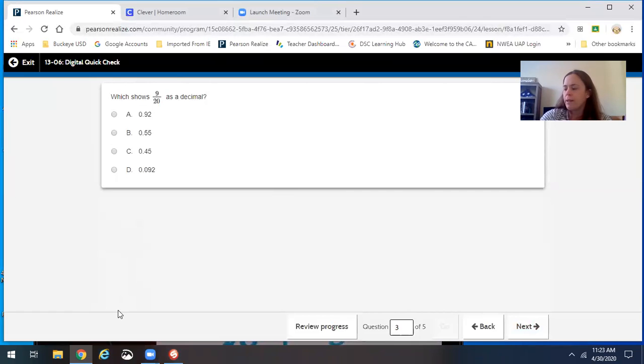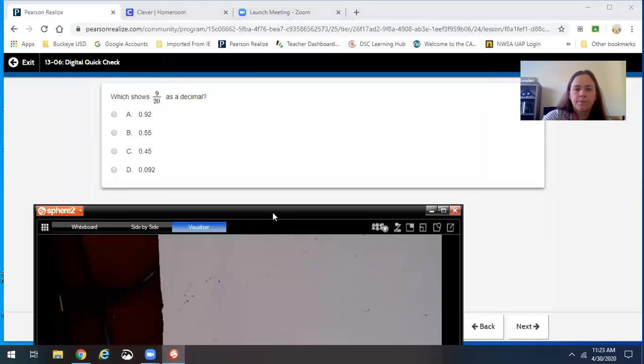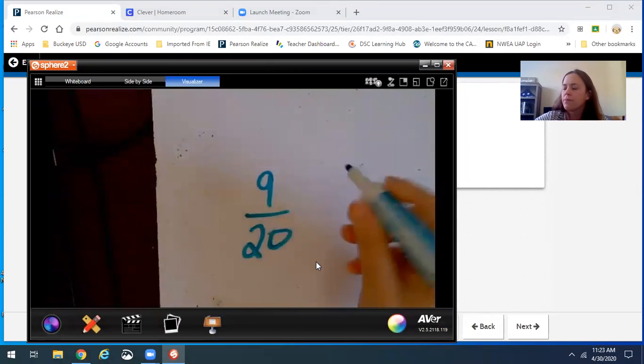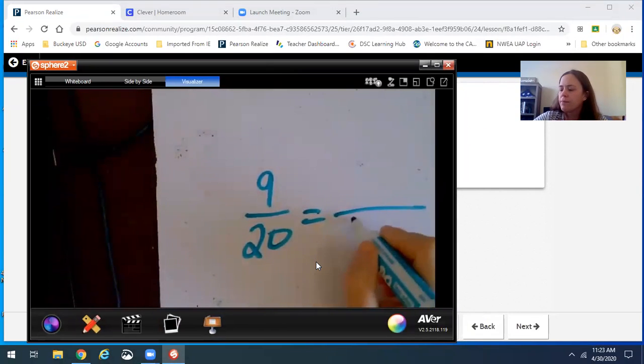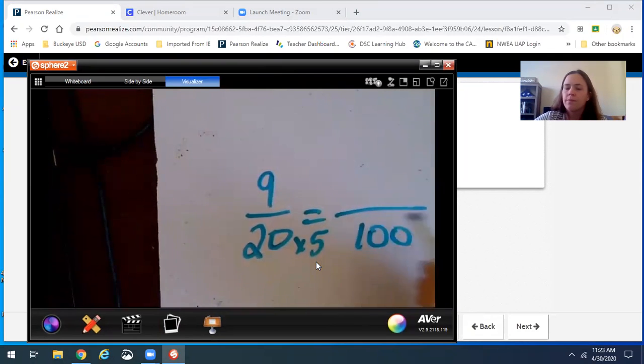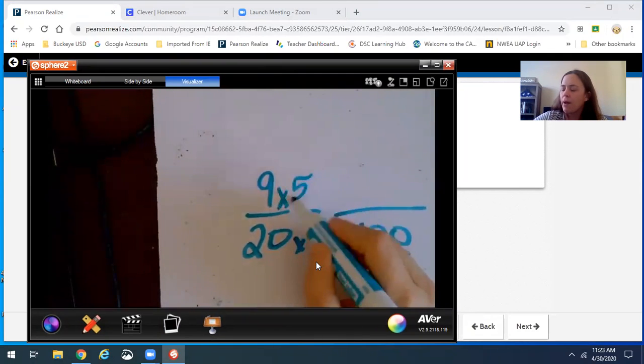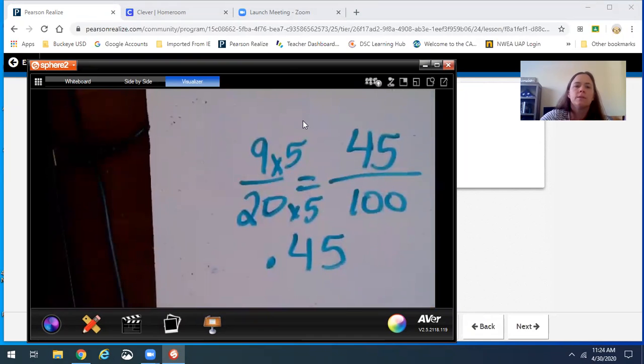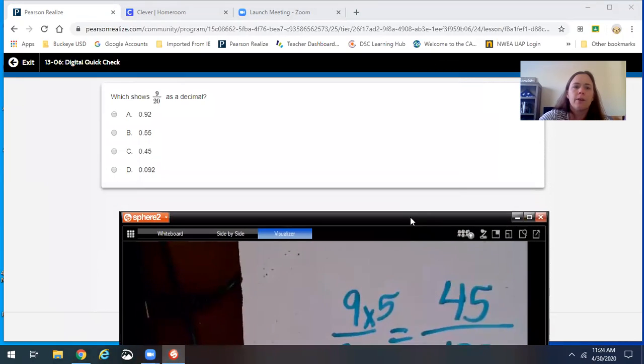Alright, 9 twentieths as a decimal, there's that 20 again, so 20 times 5 is always going to give you 100 on the bottom. So we have 9 twentieths, 20 times 5 is 100, 9 times 5 is 45, so that should be .45. So that would have been C.